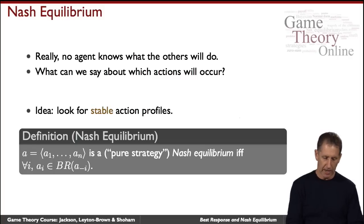Specifically, we'll look at an action profile here, a_1 through a_n, and we'll say that it's a Nash equilibrium, and later on we'll tell you why we call it specifically a pure strategy Nash equilibrium, if it's the case that, for every agent, that action, a_i, associated with the agent, is your best response to all the rest.